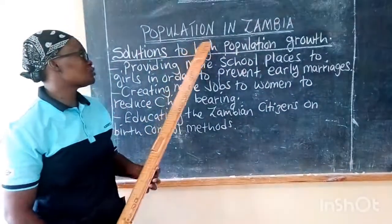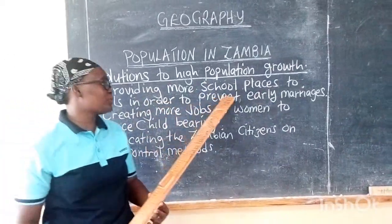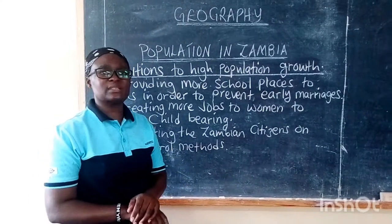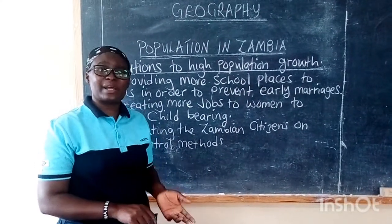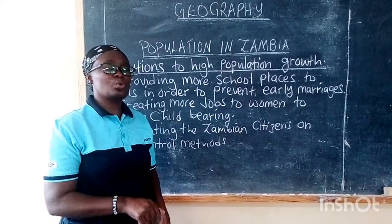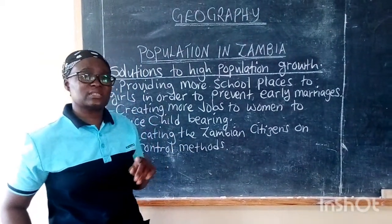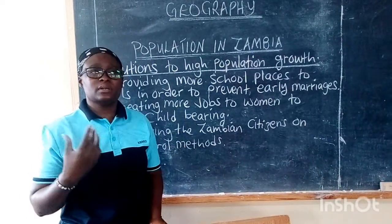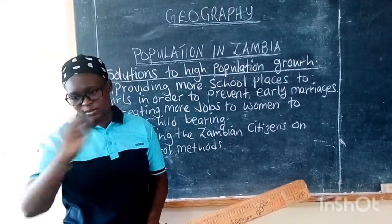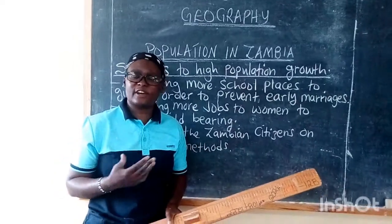Now let's look at solutions to high population growth. One of the most important solutions is to provide more school places to girls in order to prevent early marriages. Some girls are forced into marriage because they come from poor families, but we need to prevent this by creating more space in schools. Some chiefs are even removing young girls who have been forced into marriage and taking them back to school, which is a very good thing — every child deserves a good life and dignity.